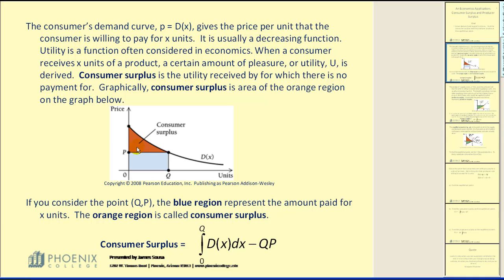You can think of consumer surplus like this: let's say you want to buy a new cell phone or iPod, and you're willing to pay $100 for it, but the market is only charging $50. You're getting about $50 worth of pleasure from purchasing it for $50 rather than $100. What you're feeling is what you could consider a consumer surplus.